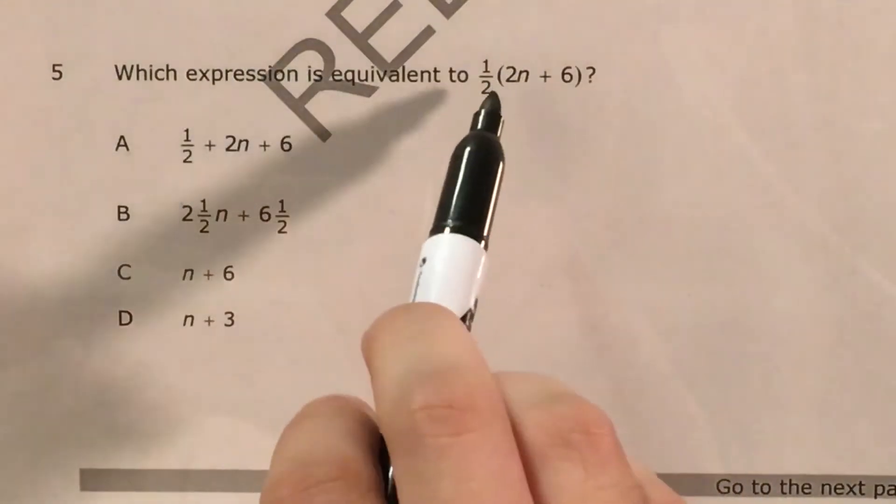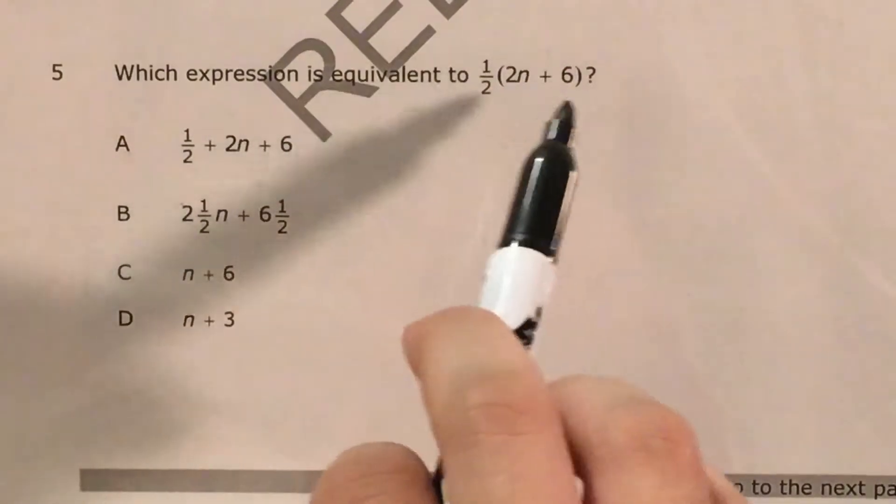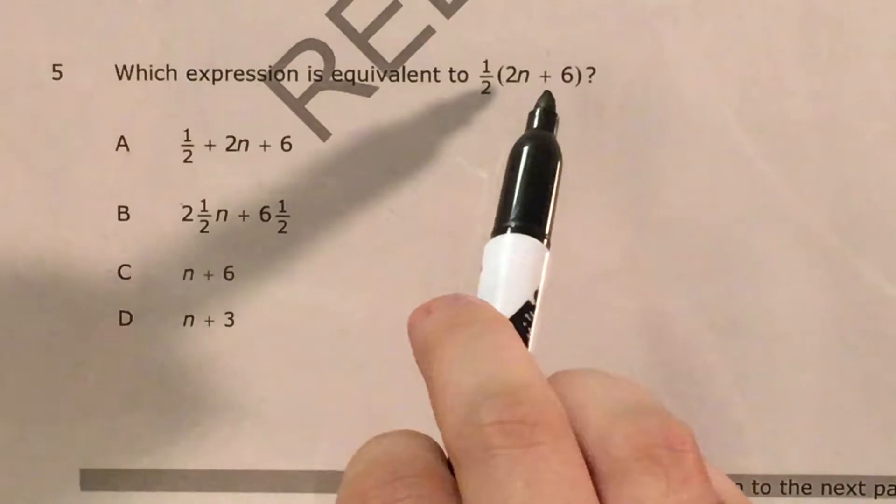So we look at this expression here. We have 1 half times, and then inside parentheses we have 2n plus 6. Now if you remember the distributive property,